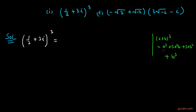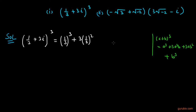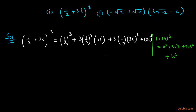We can expand it like this. Here a is 1 over 3, so we expand: (1/3)³ plus 3 times (1/3)² times 3 iota, plus 3 times (1/3) times (3 iota)² plus (3 iota)³.